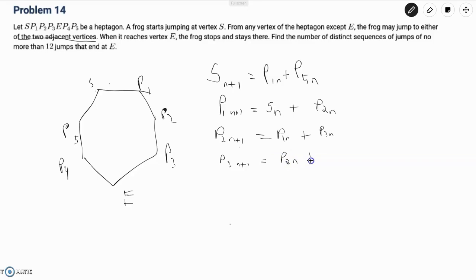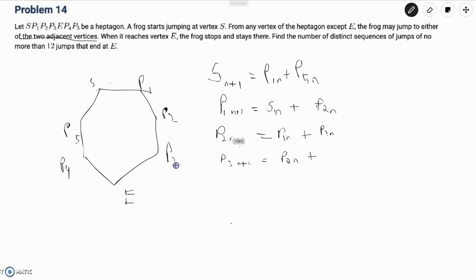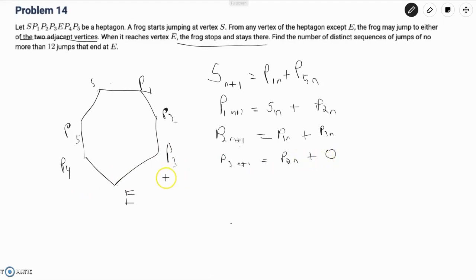Normally we would write plus E(n), but the problem statement says that when it reaches vertex E, the frog stops and stays there. So that means if it ever goes to E, it's not going to move anymore. So it would just be zero in that case, since it's not going to move back to P3 from E.